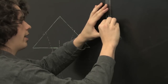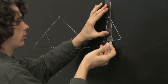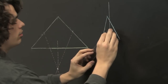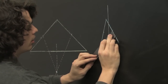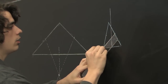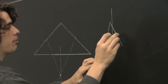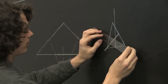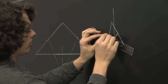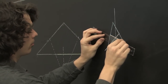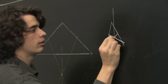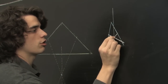From here, we simply create a right angle with each side and draw a line up from there. Do that for all three sides, and if it has been done accurately, they should all intersect at the same point. There's our circumcenter.